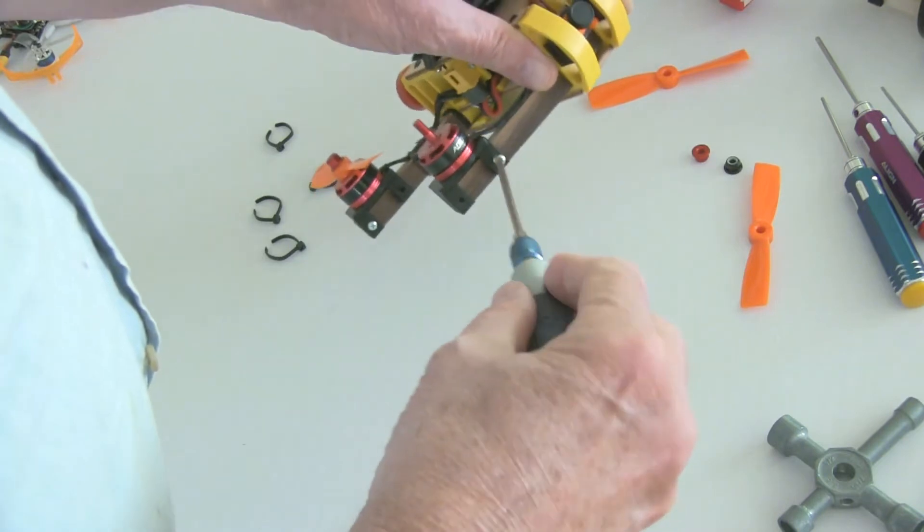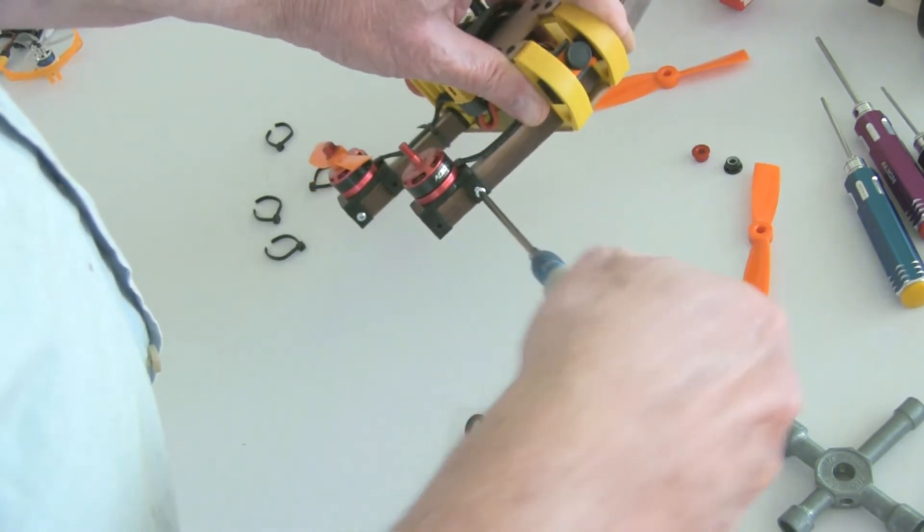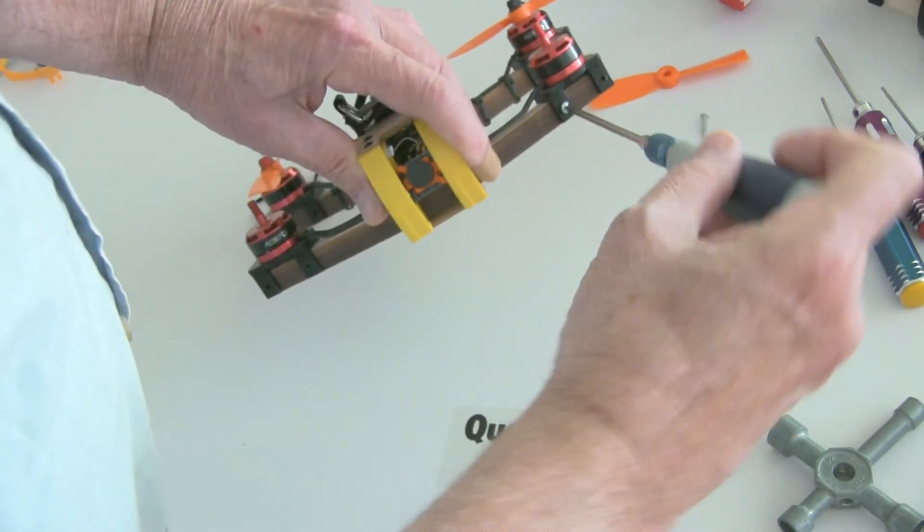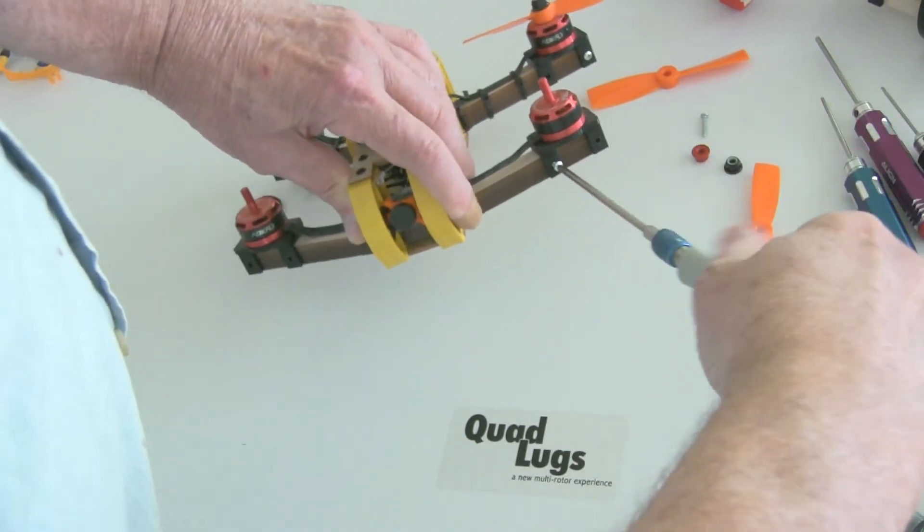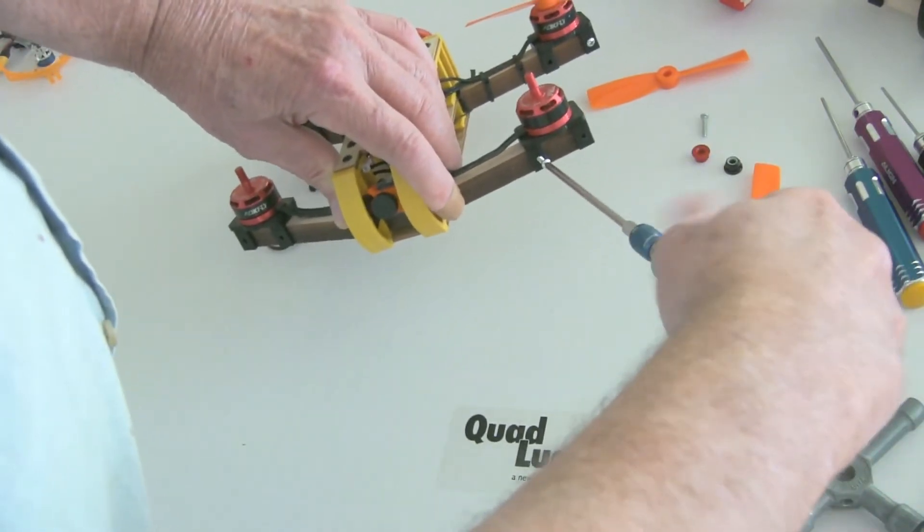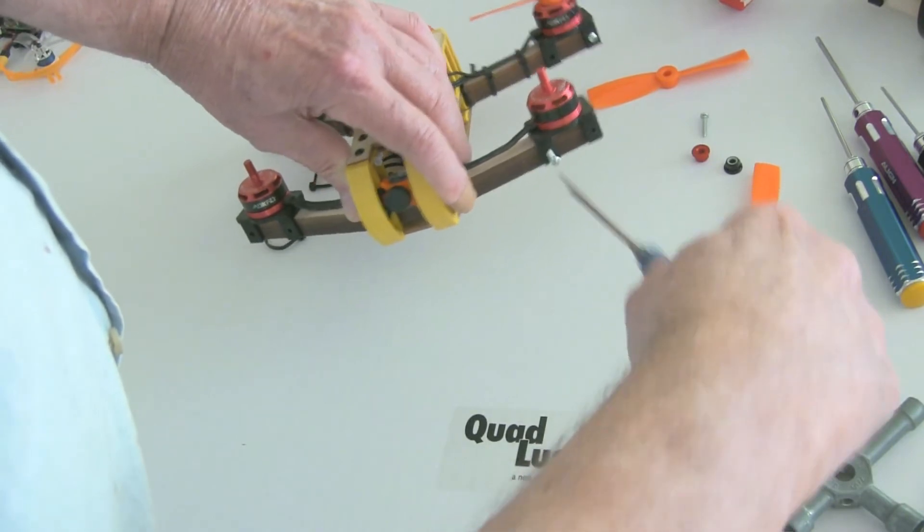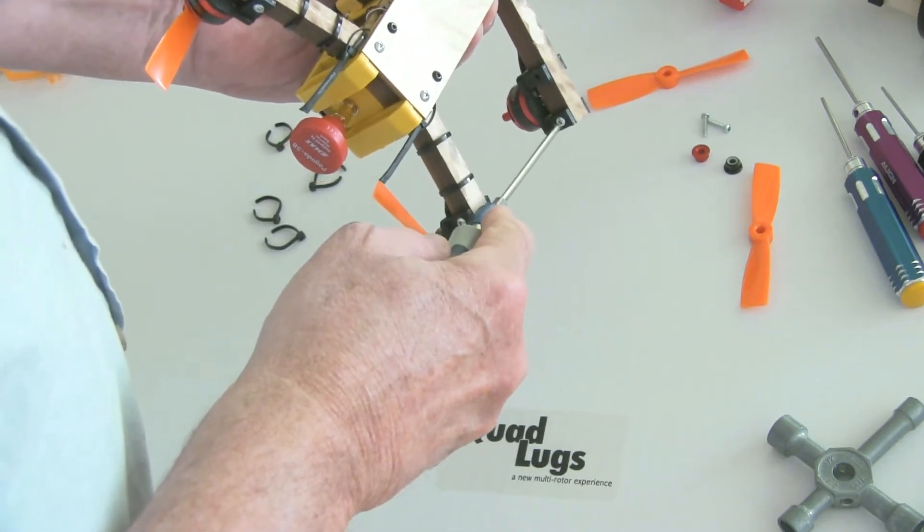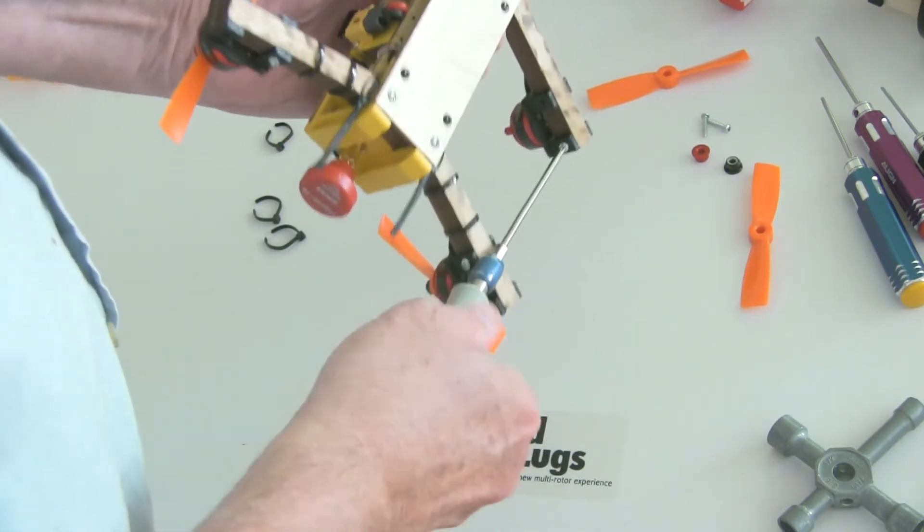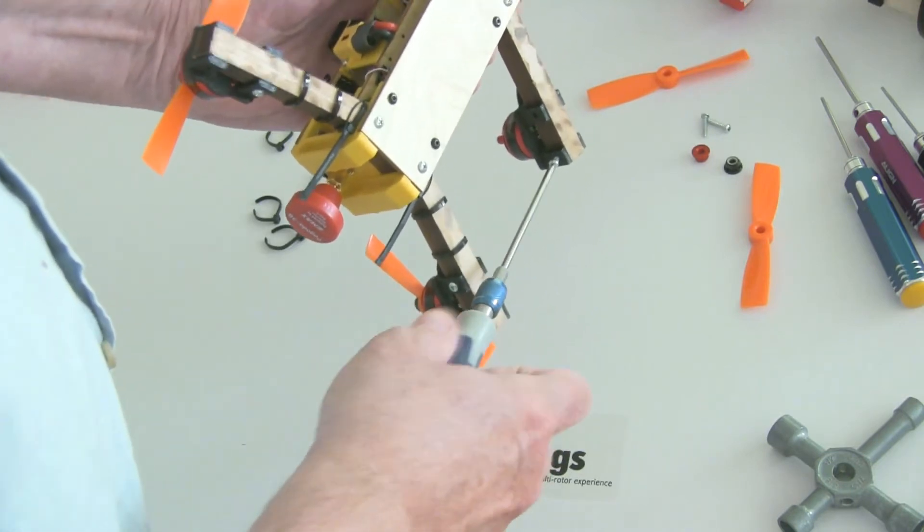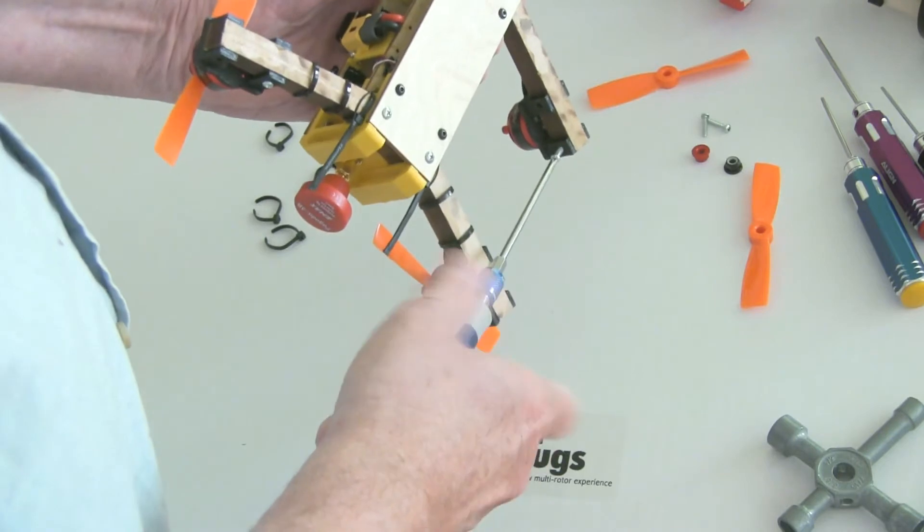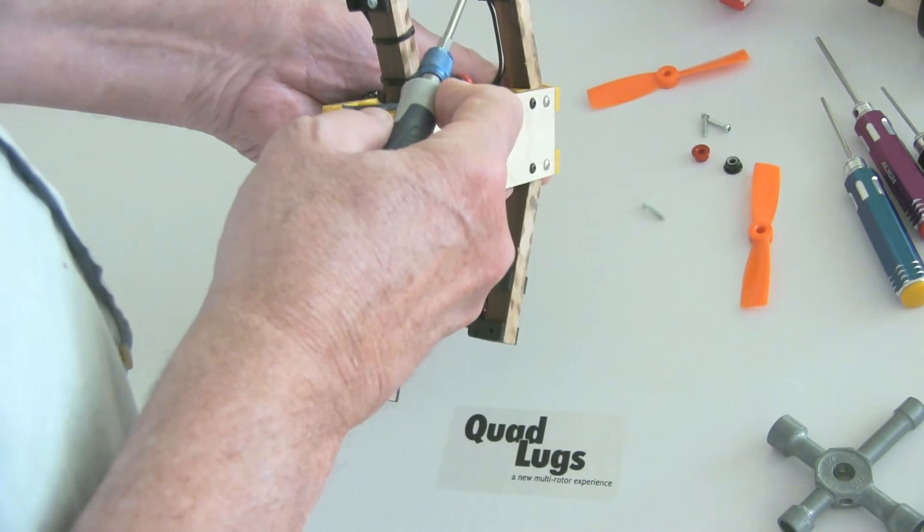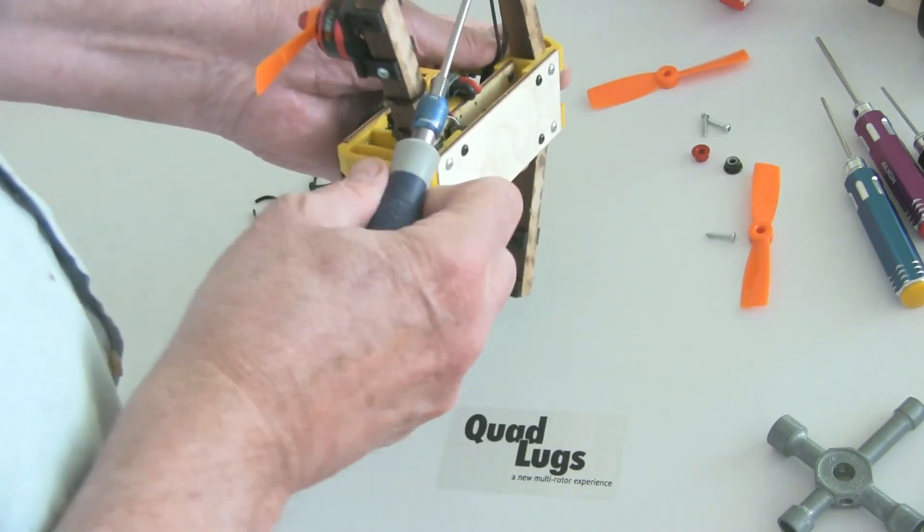These are our new prototype motor mounts, and on all of our prototypes we 3D print the items. We'll do some testing, and then we'll have molds made, and these are injection molded.